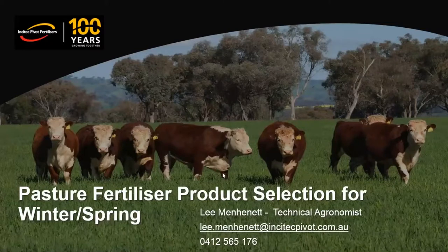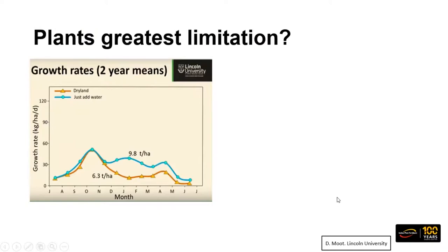The first slide covers some work that Professor Derek Moot from Lincoln University in New Zealand did when they started to bring water onto the Canterbury Plains. The orange line shows dryland yields without irrigation. They spent $10,000 a hectare bringing in irrigation with center pivots, and lifted that six-tonne dryland yield up to ten tonnes. That's predominantly in summer and early autumn periods of growth — so not a great return on investment.